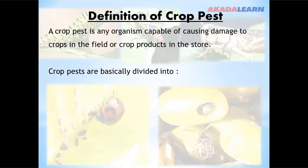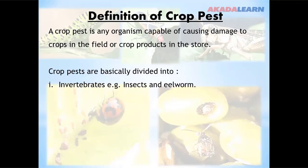Crop pests are basically divided into invertebrates, for example insects and eelworm, and vertebrates, for example birds and mammals.